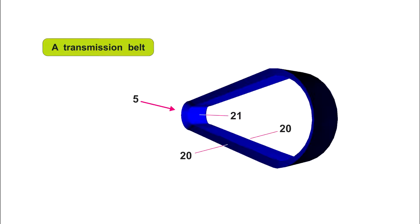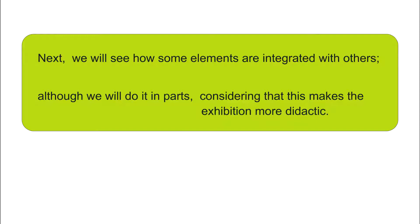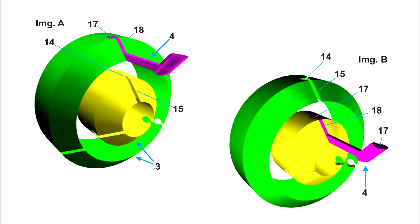We will now see how some elements are integrated with others, although we will do it in parts, considering that this makes the exhibition more didactic. Here we see how the traction elements, 4, in lilac color, fit into the tube cones, 3.